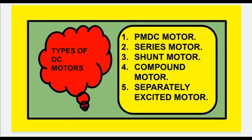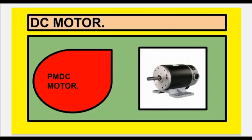Depending on the excitation of the field, DC motors are divided into the following types: PMDC motor (Permanent Magnet DC motor), series motor, shunt motor, compound motor, and separately excited motor.